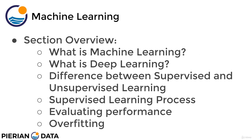In this lecture we'll cover: what is machine learning, and what is deep learning? Then in future lectures we'll discuss differences between supervised and unsupervised learning, the supervised learning process, and how we evaluate performance for different tasks — such as regression tasks like predicting house prices, or classification tasks like identifying cats versus dogs. We'll also discuss things like overfitting. These concepts apply to general machine learning algorithms, so it's important to have a solid understanding before diving into neural networks and deep learning.